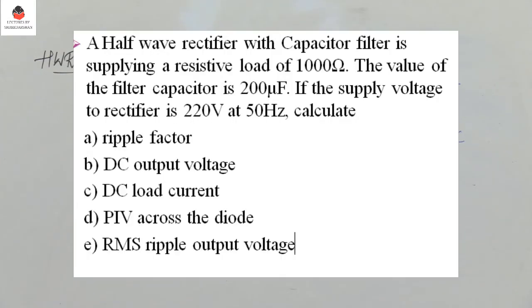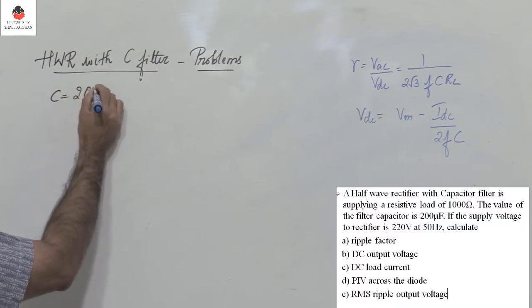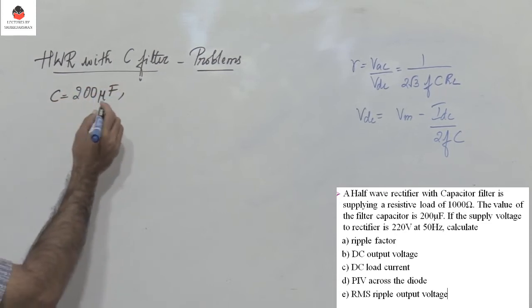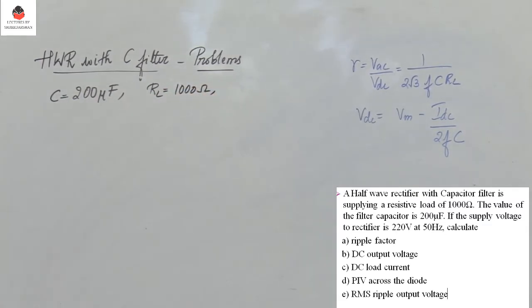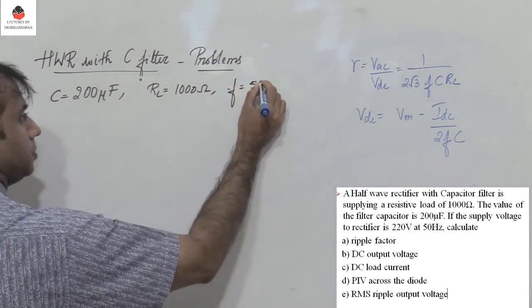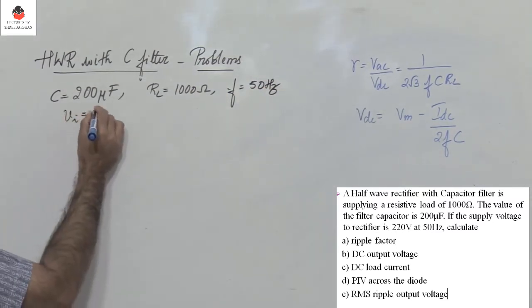Let's consider the first problem. A half wave rectifier with capacitor filter is supplying a resistive load of 1000 ohms. The value of the filter capacitor is 200 microfarad. If the supply voltage to the rectifier is 220 volts at 50 hertz, we need to calculate a few parameters. So given: capacitor C equals 200 microfarad, resistive load RL equals 1000 ohms, and frequency F equals 50 hertz.